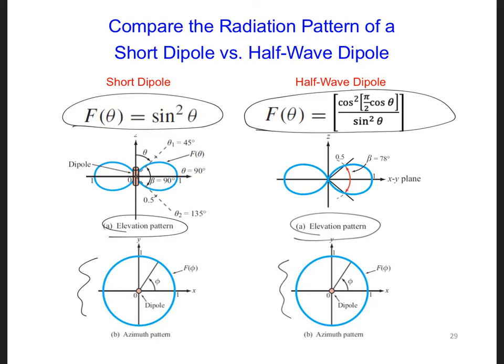How much narrower? We can define what is called the half-power beam width. The half-power beam width is the angular width between points in the radiation pattern where the magnitude of F reaches half its peak value.